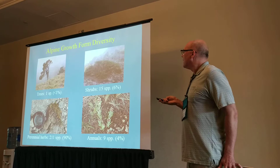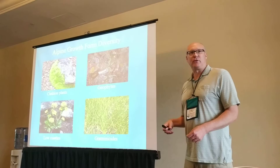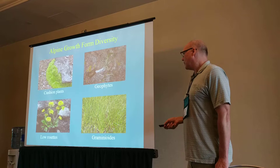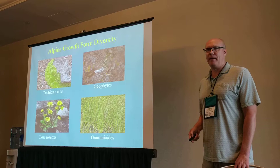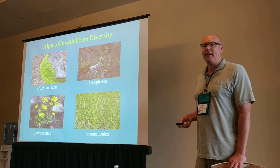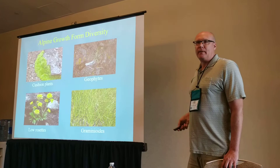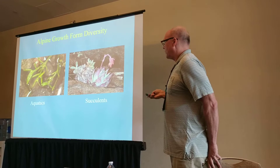Just to show a few of the growth forms: there are cushion plants — dense, small-leaved plants with short internodes — geophytes with underground tubercles, rosettes, and graminoids. There are no lianas up there and no epiphytes. A form that is also missing, which you would expect in a tropical area like Mexico, is large rosettes — those are absent from central Mexico. There are a couple of succulents and some aquatics.